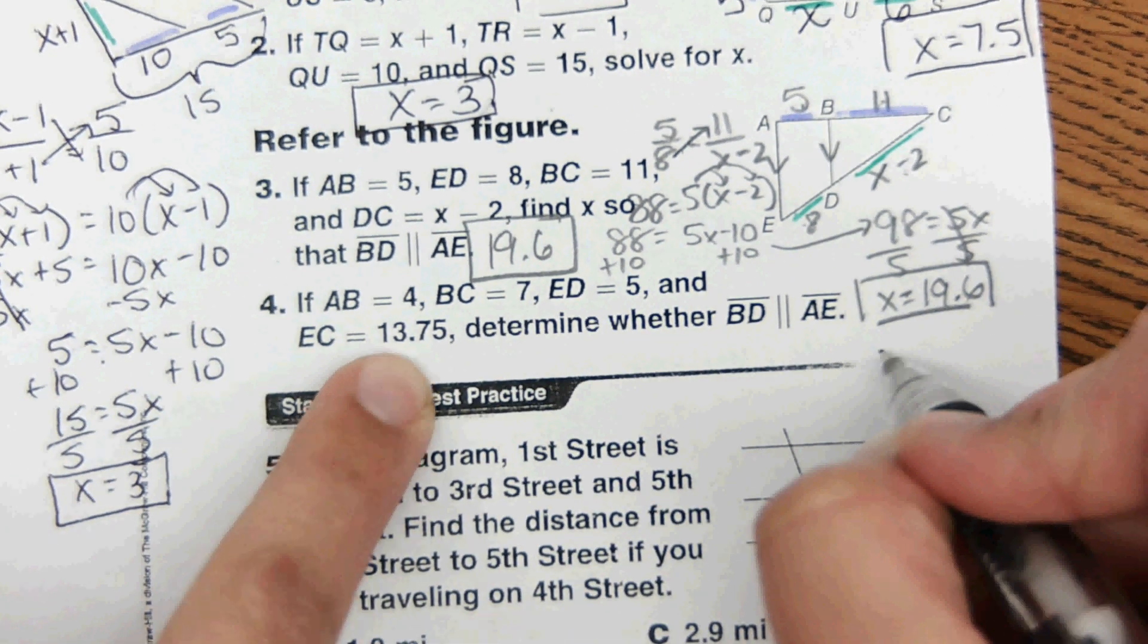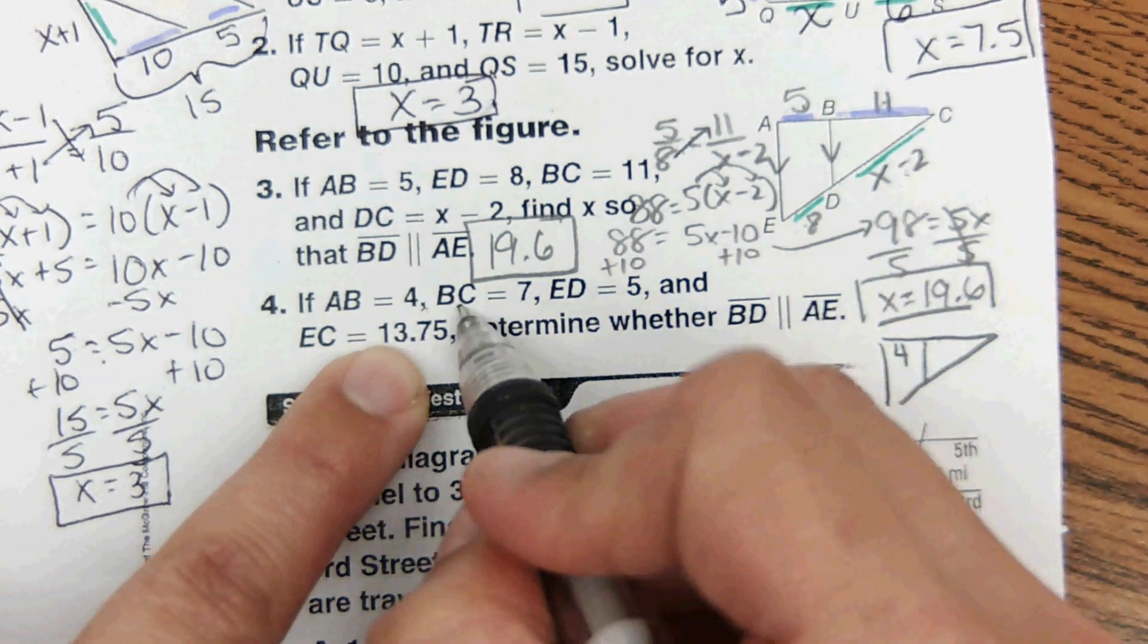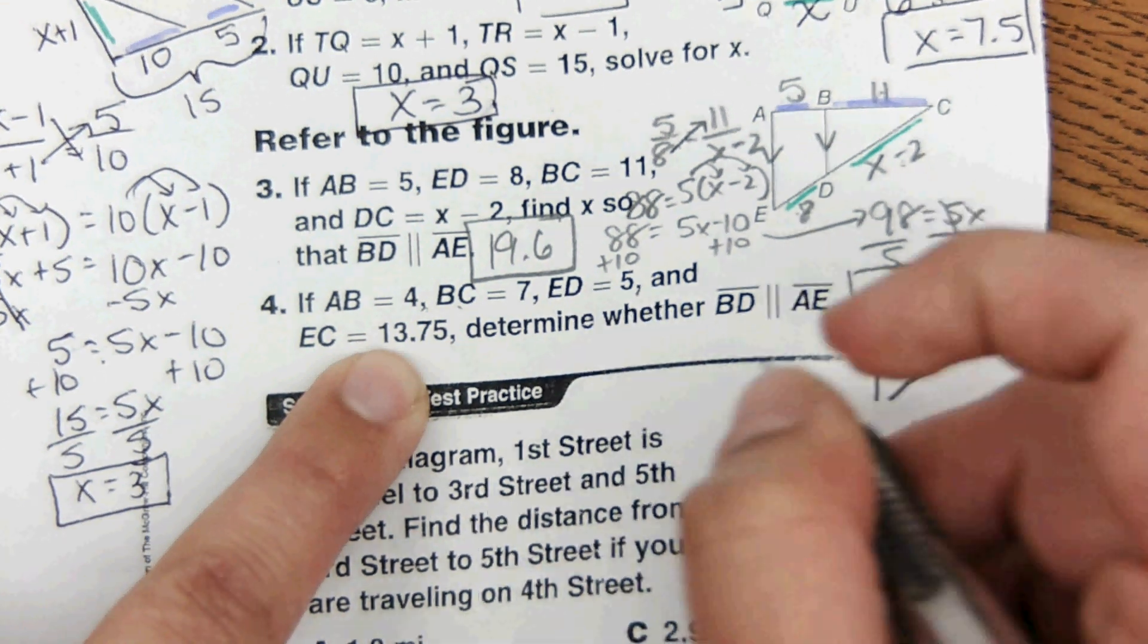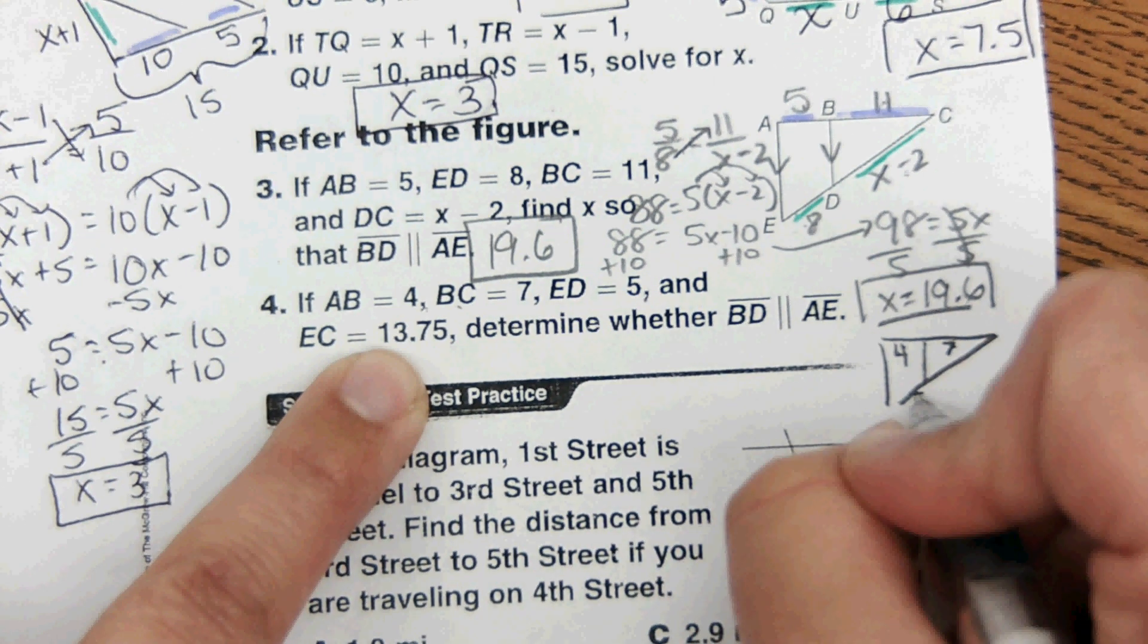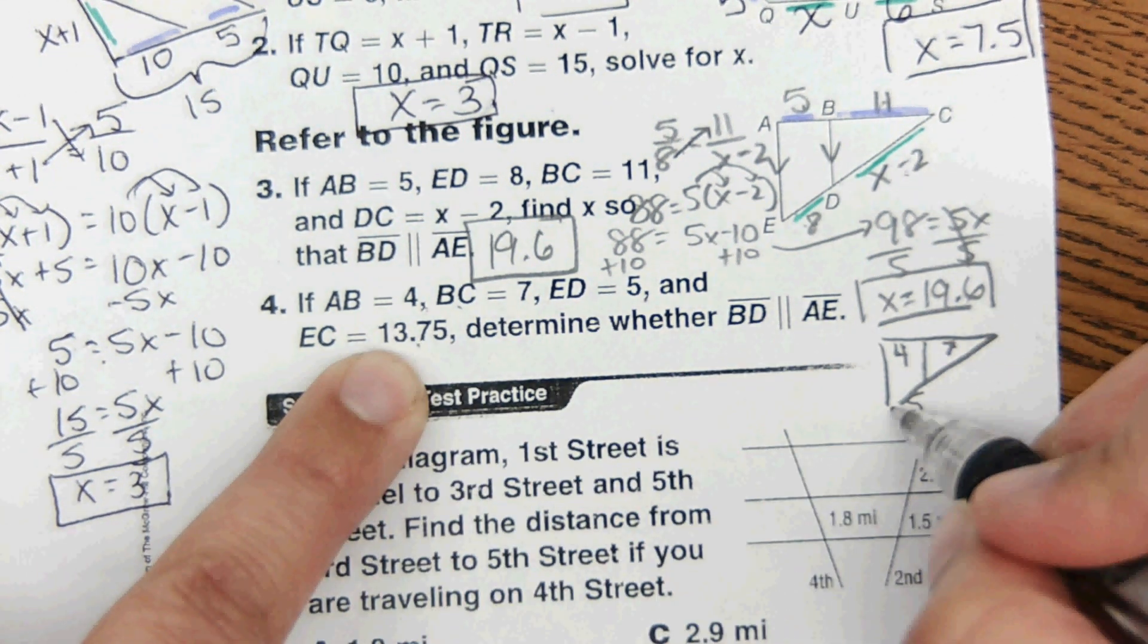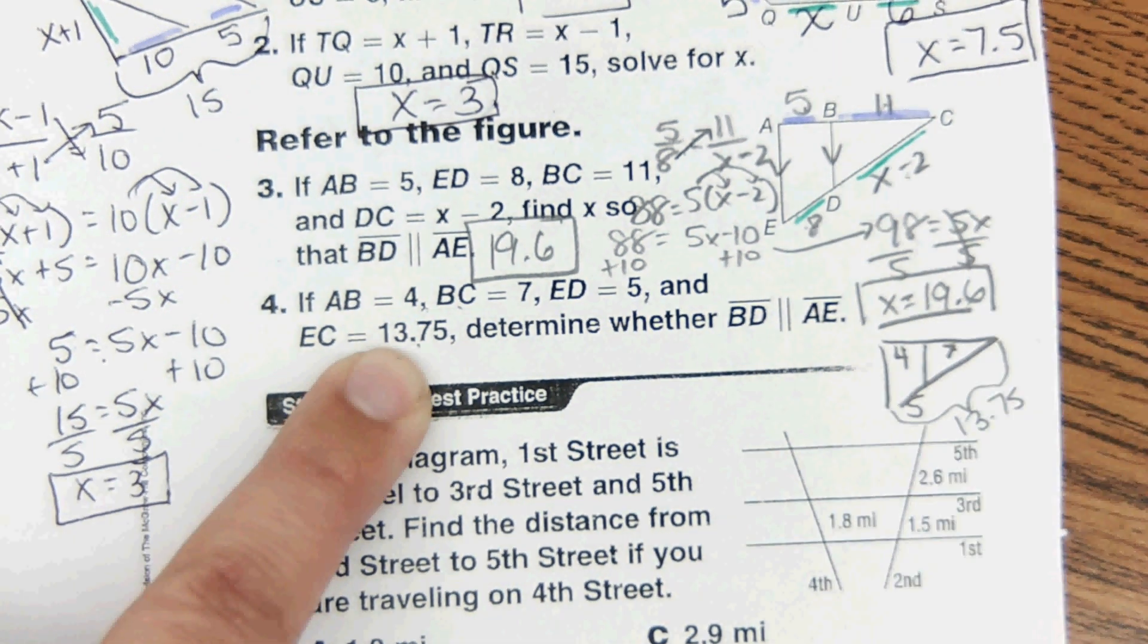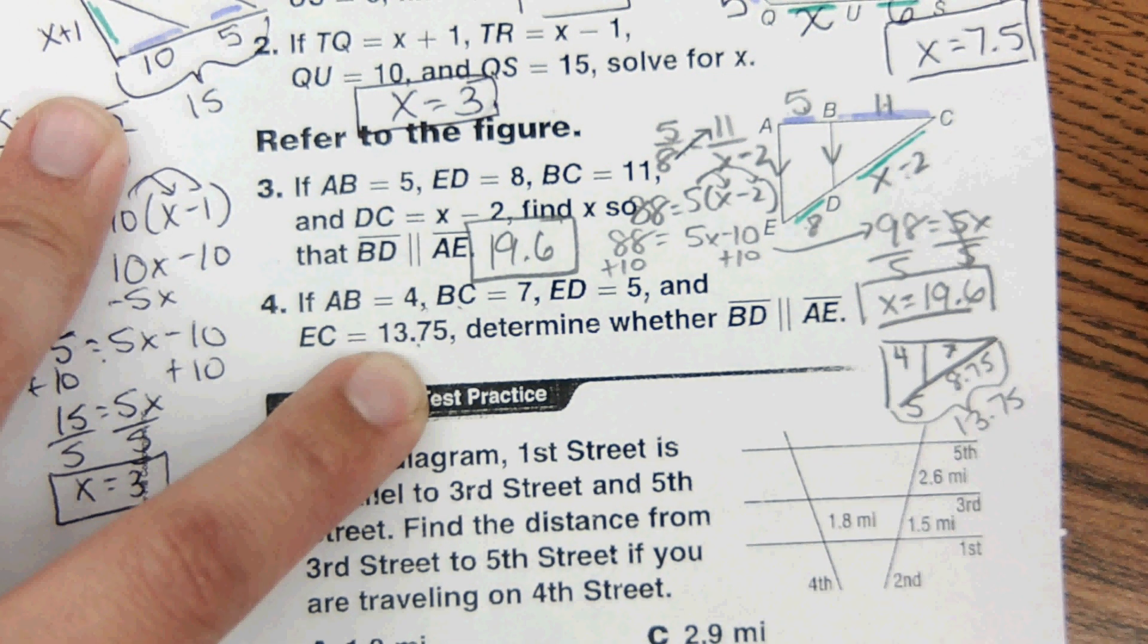Okay, same image. I'm going to redraw it so I have space to label everything. A, B is 4, BC is 7, ED is 5, and EC is 13.75. And that gives us 8.75 here.